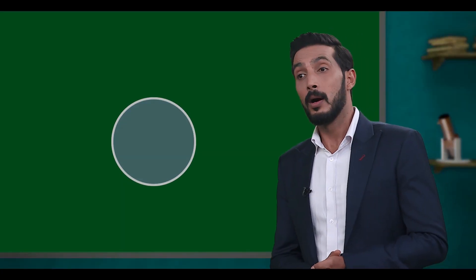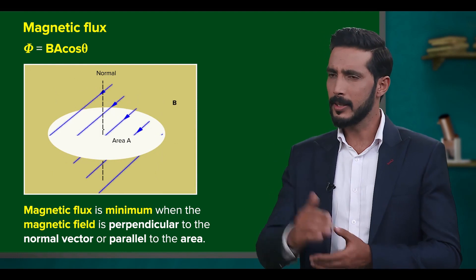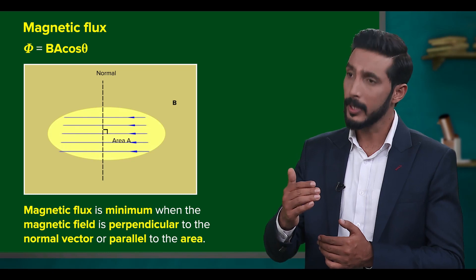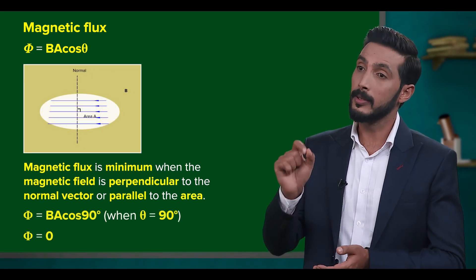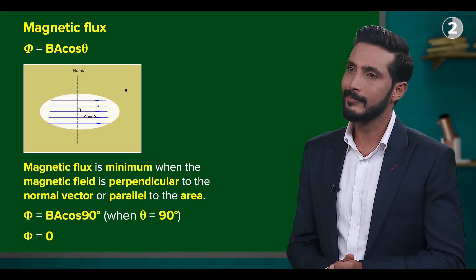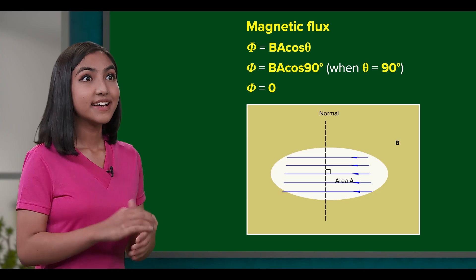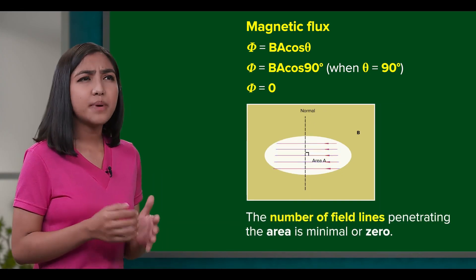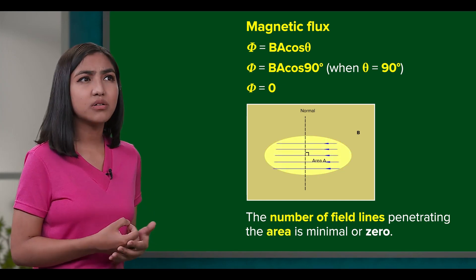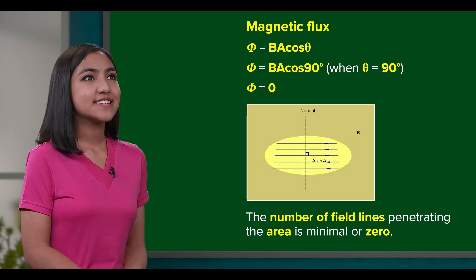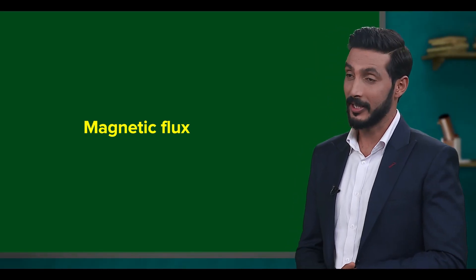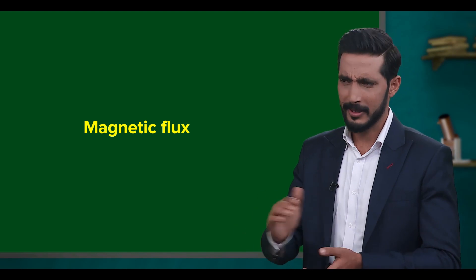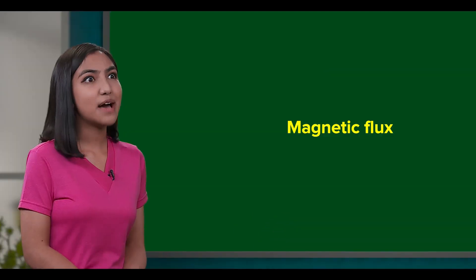Right on. On the other hand, if theta is perpendicular to the normal vector, then that means it's parallel to the area, which results in the flux being zero. And all this means is that the number of field lines penetrating the area is minimal or even zero. This makes a lot of sense. It's quite amazing to see physical facts translated into mathematics seamlessly like this, isn't it? Absolutely.